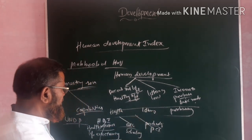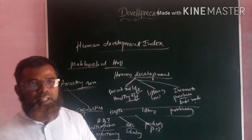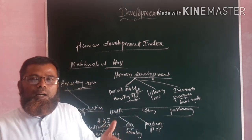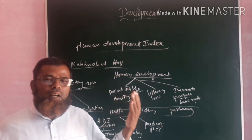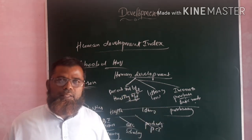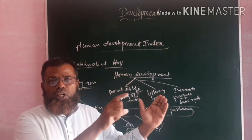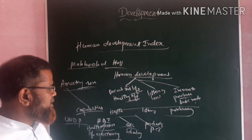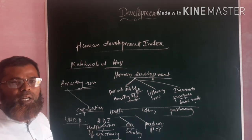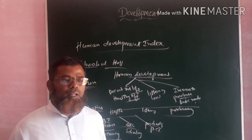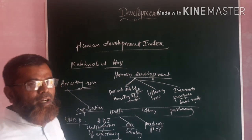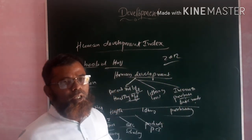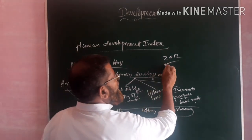On the basis of the Human Development Index, we can compare one country's HDI with another country's HDI, and put a particular country in the developed stage or underdeveloped stage. In our India, according to 2012 and later 2014 figures, our HDI was 0.586, and our position in the world was 135th ranking among 187 countries.